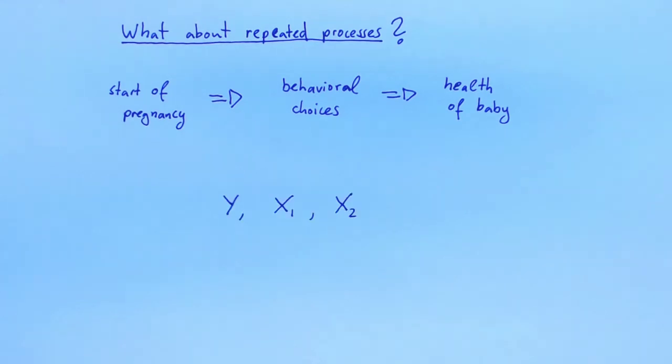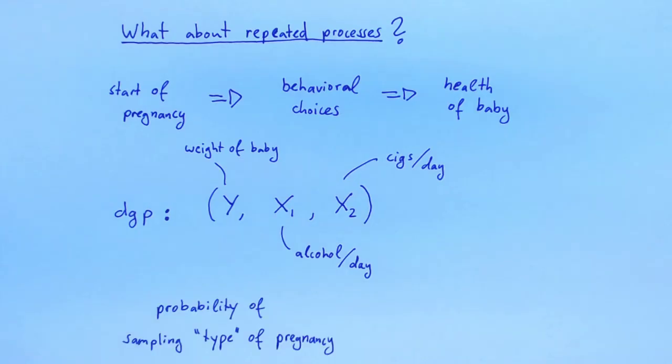Let Y, X1 and X2 be random variables. These variables describe properties of a random pregnancy. Y gives the weight of the baby at birth. X1 gives the average alcohol consumption of the mother during the pregnancy. And X2 gives the average cigarette consumption. The collection Y, X1, X2 is the DGP or population that we want to investigate. To sample from this DGP, we have to be able to randomly sample pregnancies. This means that we have to make sure that the probability that a certain kind of pregnancy ends up in our sample is equal to the frequency with which this kind of pregnancy occurs in real life.